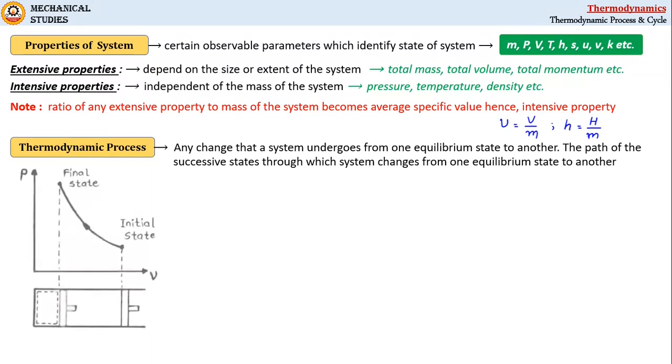For example, let's consider a compression process of gas enclosed in a piston-cylinder device. Here a fixed mass of gas enclosed in the cylinder is actually a system whose initial and final states are 1 and 2.